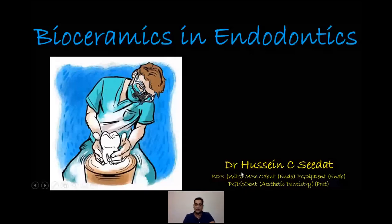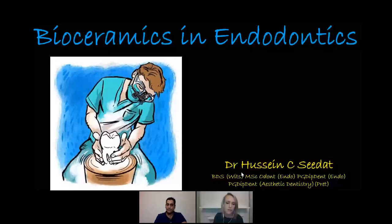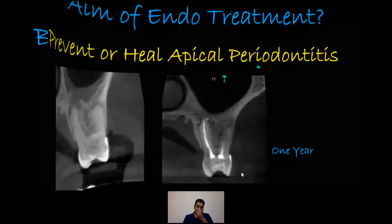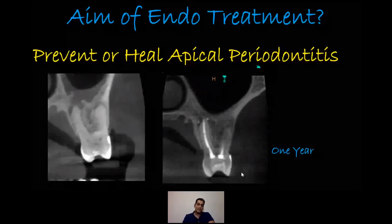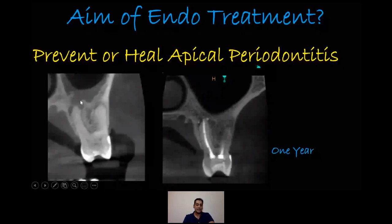So that's the topic for this evening: bioceramics in endodontics. The aim of endodontic treatment is basically to prevent or heal apical periodontitis — that is the apical infection around the tip of the root. Here is a one-year recall I did this week on a massive infection — actually a maxillary sinusitis of endodontic origin. After one year, we can see that it's completely healed up. So our aim was accomplished in this case.